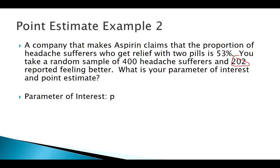Our parameter of interest here is the proportion — the overall proportion of people feeling better. From this sample we use p-hat as an estimate of p. That's 202 over 400. So the key difference: when we have categorical data, proportion is often our parameter of interest and we use p-hat to estimate p.